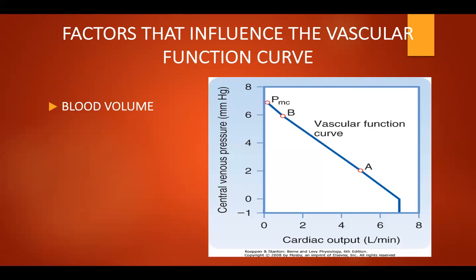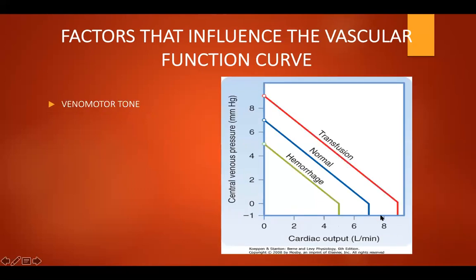For a given vascular compliance, the mean circulatory pressure is increased when blood volume is expanded — that is, hypervolemia — and is decreased when blood volume is diminished. Volume is directly proportional to cardiac output, meaning if there is high pressure and high volume, there will be high cardiac output.